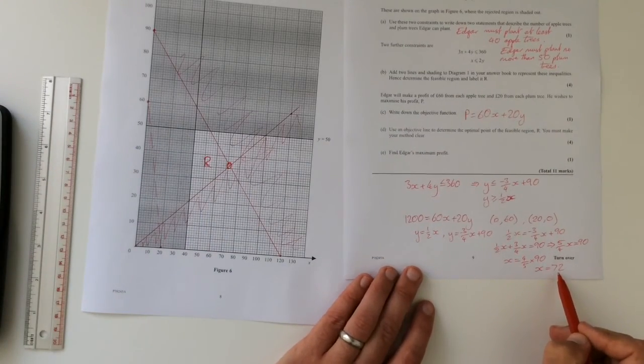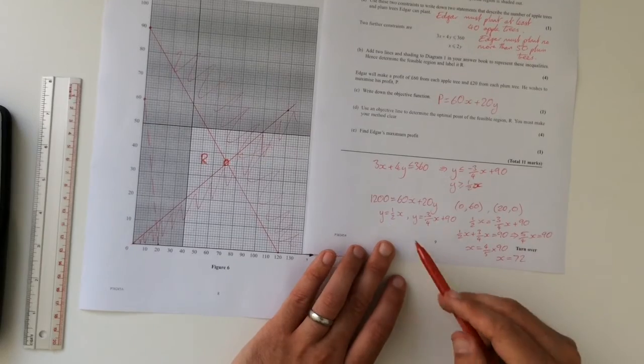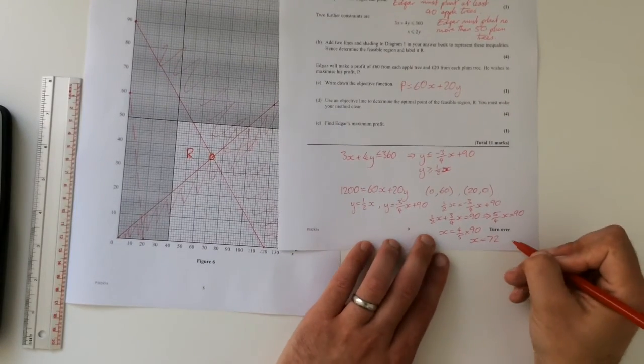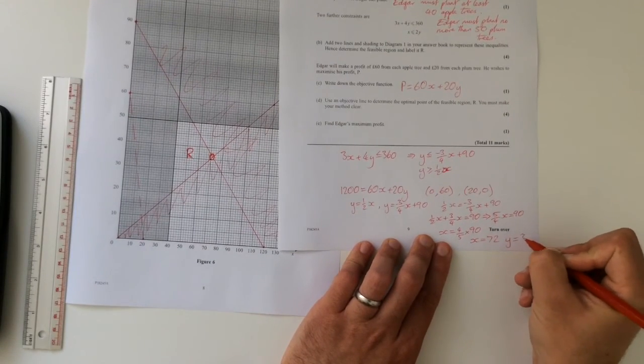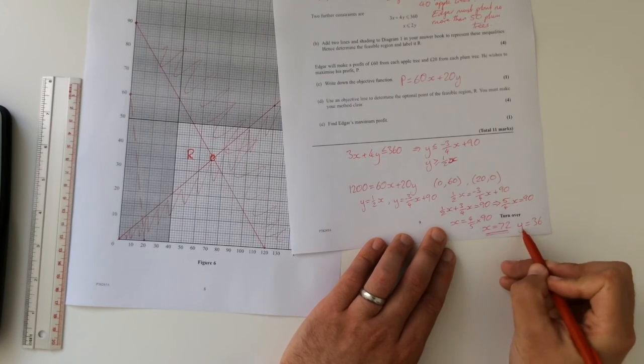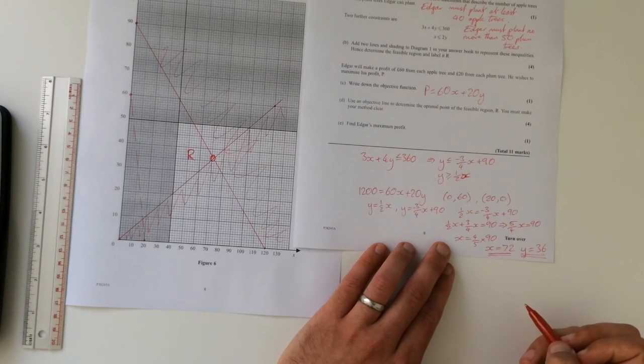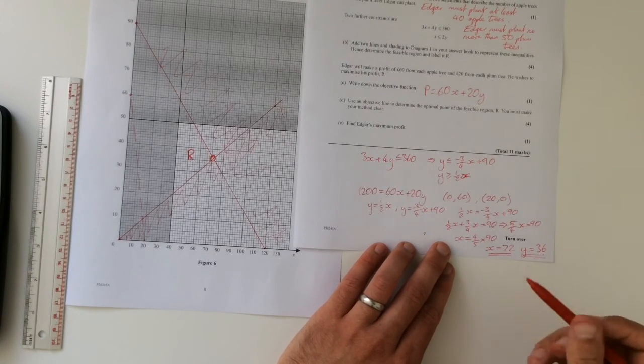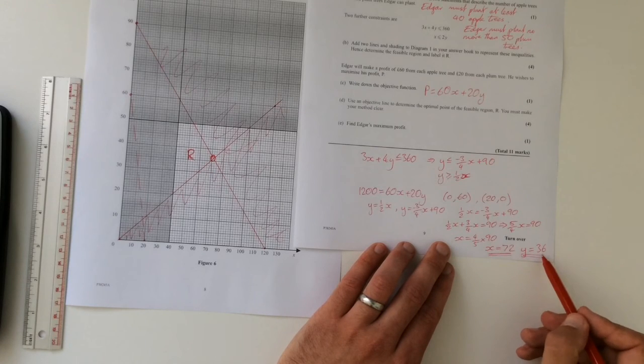If that's what x is, we can work out what y is, of course, because we know that y is a half of x. So, this gives us y must equal 36. So, those two are our optimal values for this problem. x is 72, y is 36.